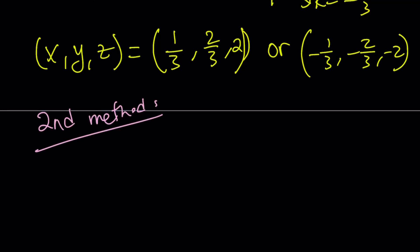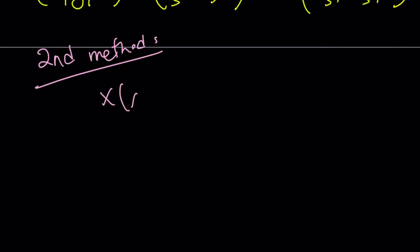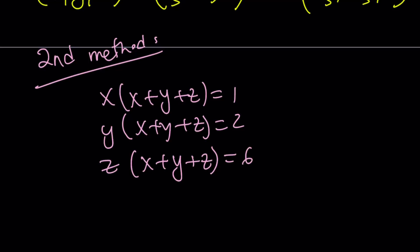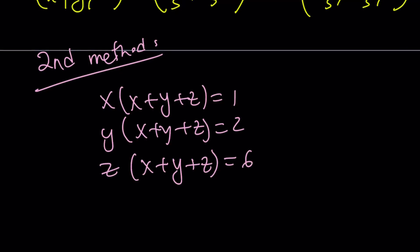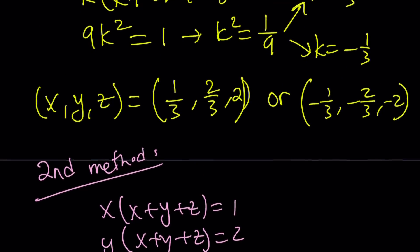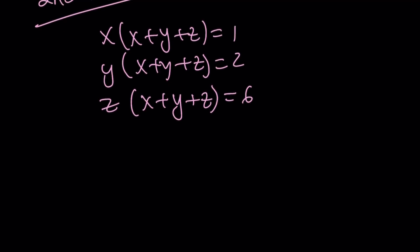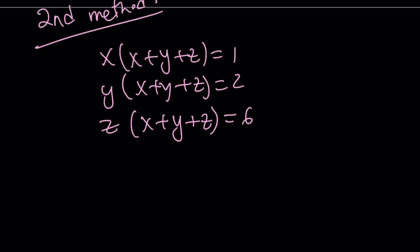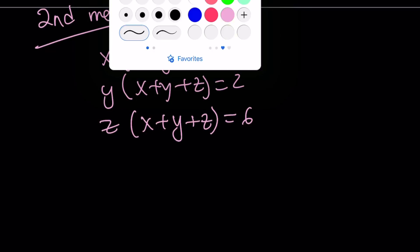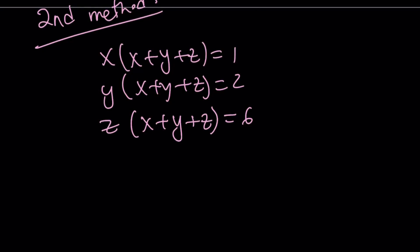My second method is kind of—let me rewrite the system. x times x plus y plus z is equal to 1. With the y, you get a 2. And with the z, you do get a 6. Why did I pick these numbers? Because 1 plus 2 plus 6 is 9. And we kind of saw that here too, right? k plus 2k plus 6k gave us 9. So 9 is a perfect square. That's why I picked these numbers. And this approach basically relies on pretty much the same thing but slightly differently.